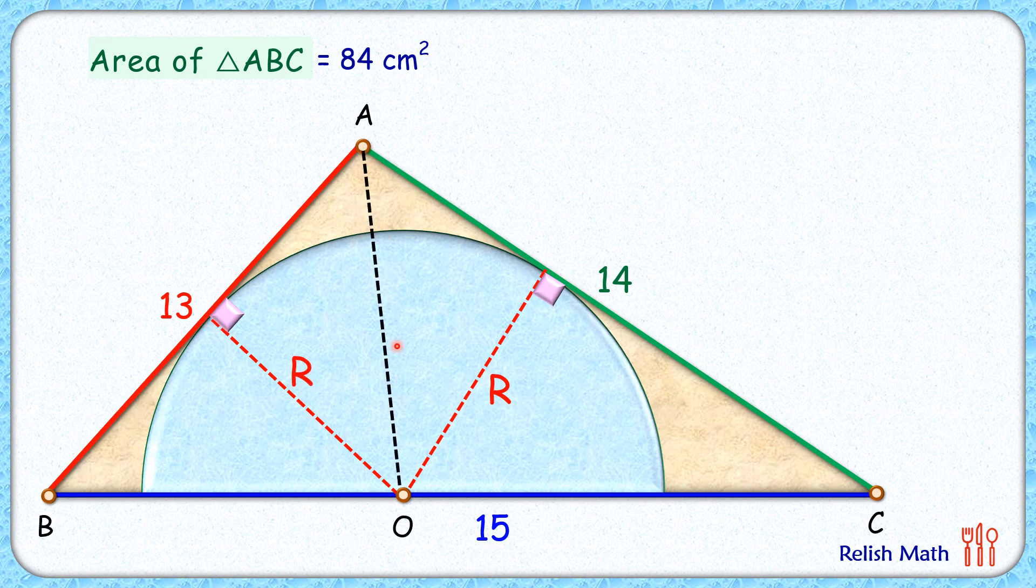Let's join A O, which will divide this triangle into two triangles. So area of triangle ABC equals the sum of area of these two triangles, that is triangle AOC and triangle AOB.